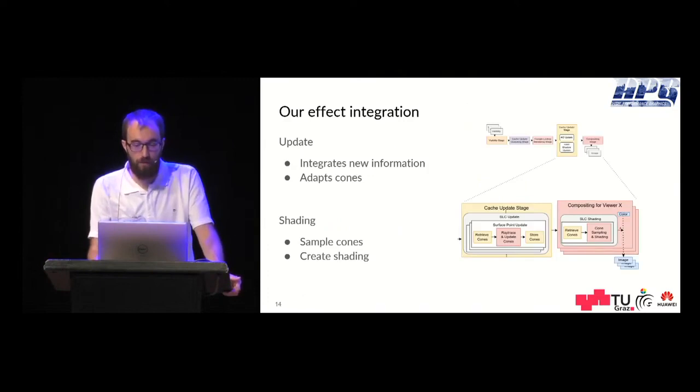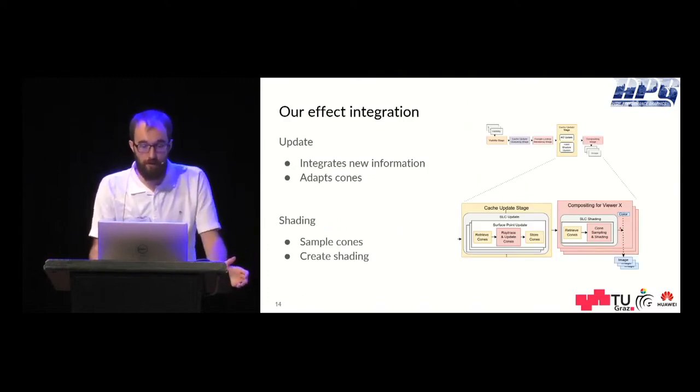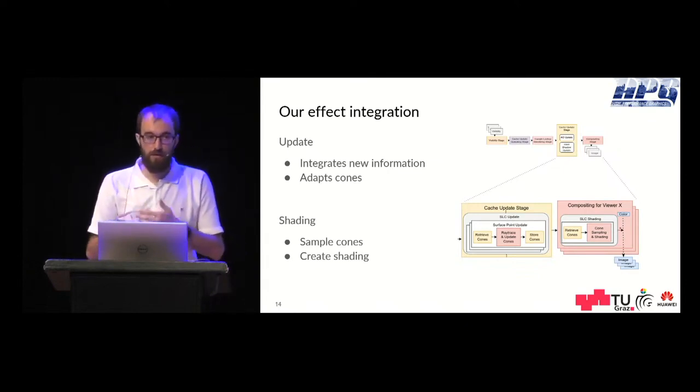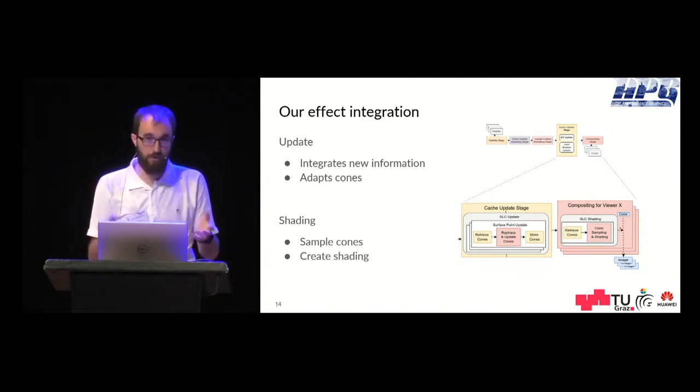What we add is the surface light cone update to the cache update stage where we retrieve the cones if they are already represented. Otherwise one can fetch them from a different LOD or such. And then we integrate the new data into the cones and update them and then we store them again.